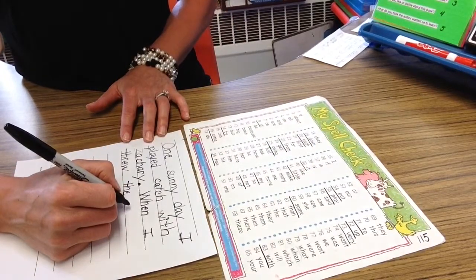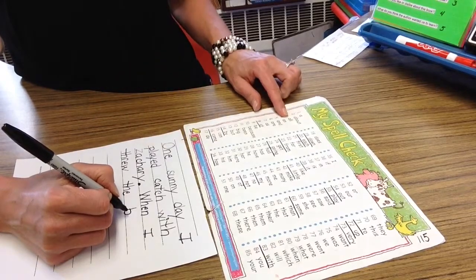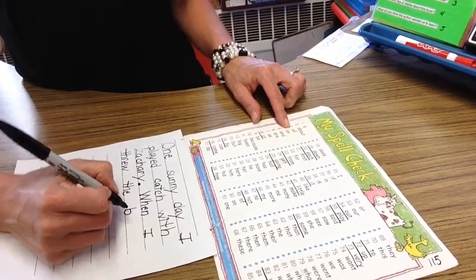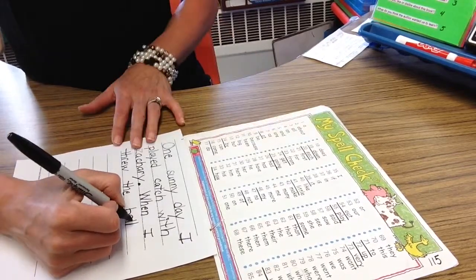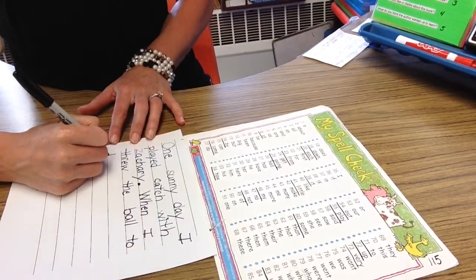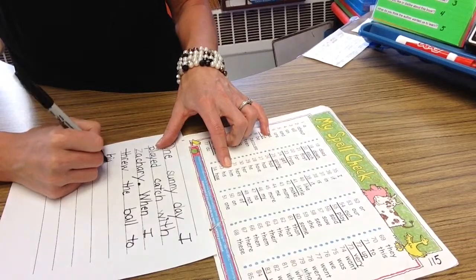Ball, ball, buh, all. Oh I hear all and that's a word wall word so I can also use a word wall word to help me spell other words. Here's all right here. When I threw the ball to him. Him, that starts with an H and that's a word wall word. To him.